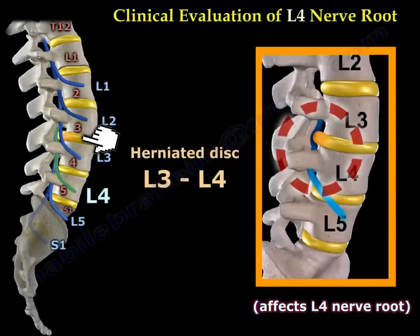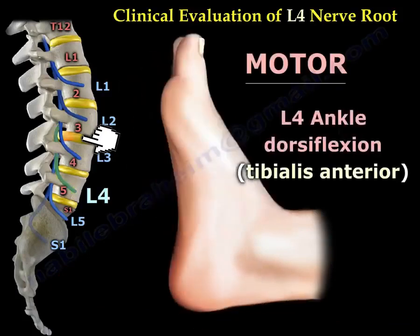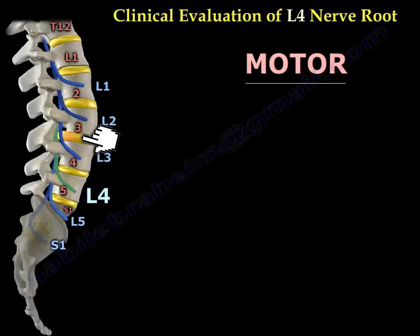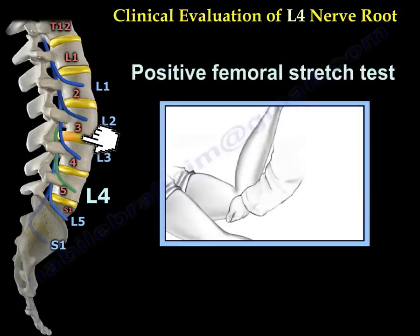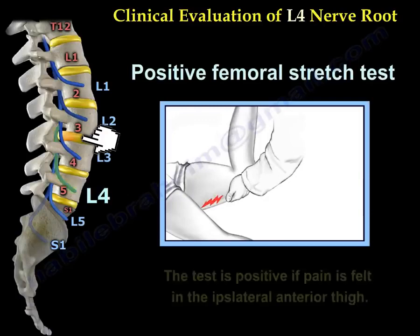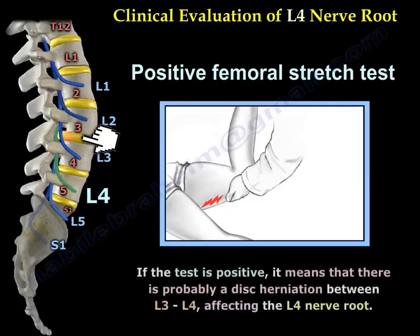A herniated disc between L3 and L4 will affect the L4 nerve root. The sensation of L4 is illustrated in this diagram to be on the medial side of the leg down to the medial side of the foot. The L4 motor will be ankle dorsiflexion — we usually test the tibialis anterior — and knee extension. A positive femoral stretch test can also be seen in L4 nerve root involvement. The test is positive if pain is felt in the ipsilateral anterior thigh, indicating a probable disc herniation between L3 and L4 affecting the L4 nerve root.